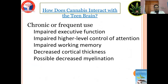How does cannabis interact with the teen brain? With chronic or frequent use, there is impaired executive function, impaired higher-level control of attention, impaired working memory, decreased cortical thickness, and possible decreased myelination.